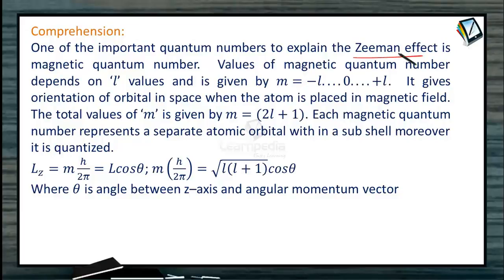One of the important quantum numbers to explain the Zeeman effect is magnetic quantum number. Values of magnetic quantum number are given by M = -L to +L, so there will be total 2L+1 values. Each magnetic quantum number represents a separate atomic orbital within a subshell.